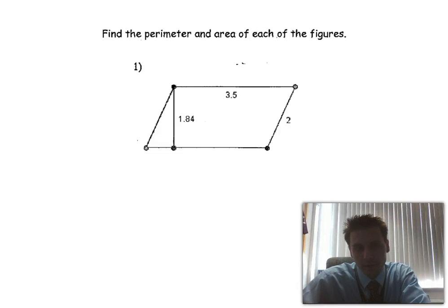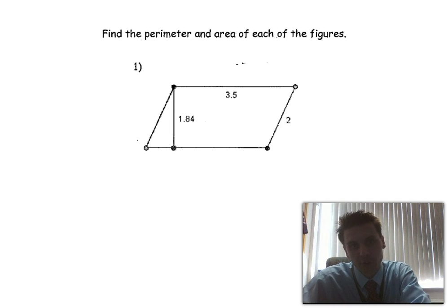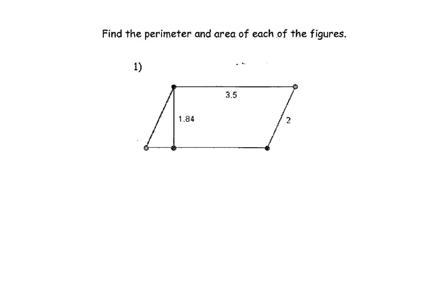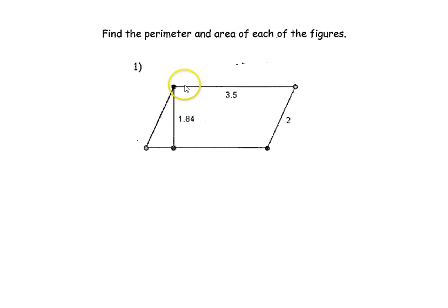All right, everybody. We're here with a Chapter 8 practice test. I'm going to do problems number 1 and 2, where we are asked to find the perimeter and area of each of the figures. In number 1, we have what we can safely assume is a parallelogram — even though we don't have the parallel line notation there. We want to find the perimeter and the area.